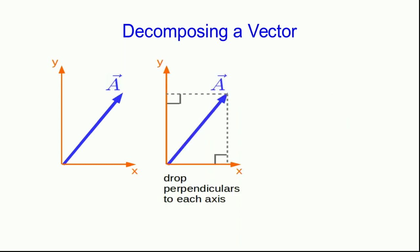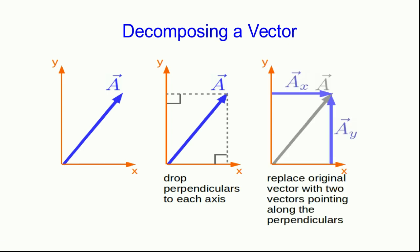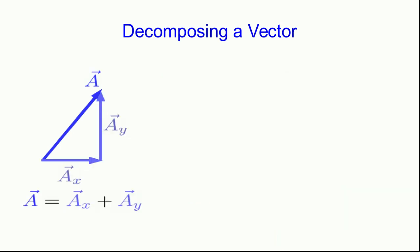In any case now we drop perpendiculars from the tip of the vector onto each axis and it's very important that these are perpendicular to the axes. Replace those with two vectors that we're giving very particular names. If the vector is a these are the vectors ax and ay. And now just rearranging them you can see that a is the vector sum of ax and ay.